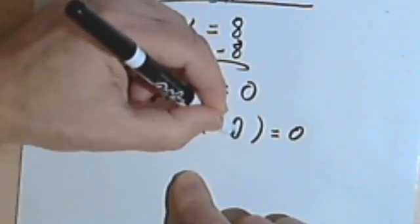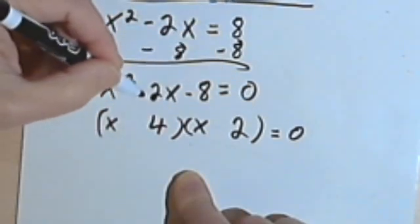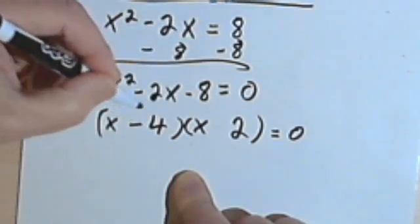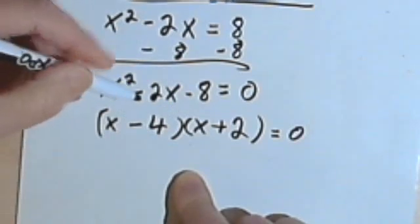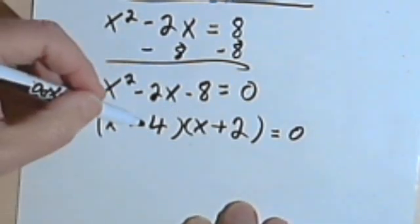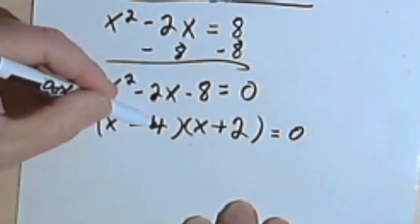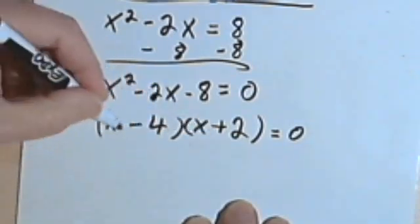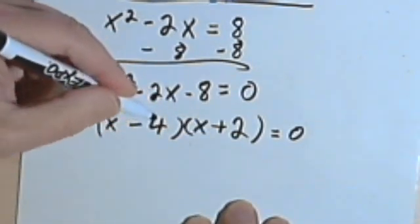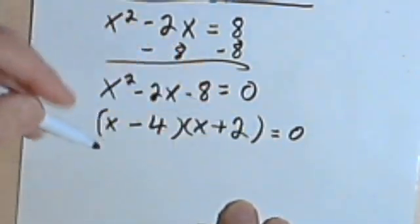So here's the 4, here's the 2. And I want negative 4 and positive 2, since my middle term is negative. I'm gonna give that negative sign to the larger of the two numbers. So I've got x minus 4 times x plus 2 equals 0.